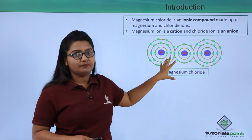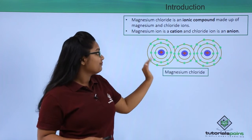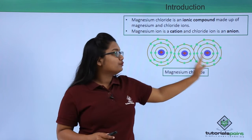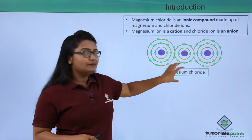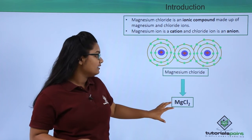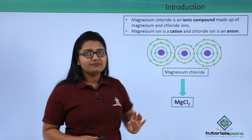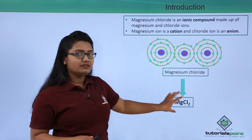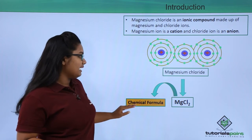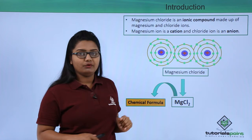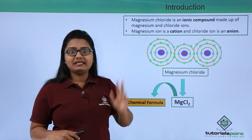This is the structure of a magnesium chloride molecule. The atom in the middle is magnesium, and the two outer atoms are chlorine. We write magnesium chloride symbolically in shorthand form as MgCl₂. This shorthand notation is what we call the chemical formula of magnesium chloride.